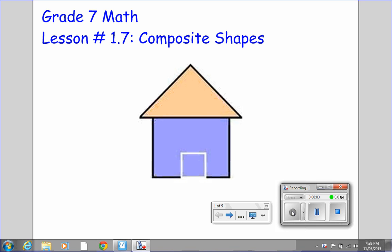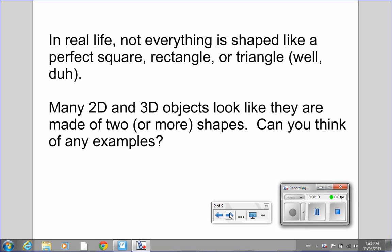Welcome back to grade 7 math lesson number 1.7 composite shapes. In real life, not everything is shaped like a perfect square, rectangle, or triangle. Many 2D and 3D objects look like they're made of two or more shapes. Can you think of any examples of 2D and 3D objects that look like they're made of two or more shapes?